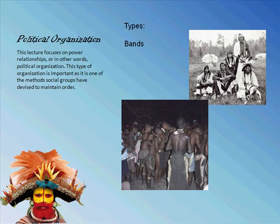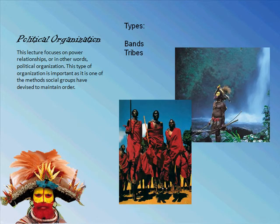The next type of political organization is a tribe. These are a little bit more formal than bands. We generally see this in horticulturalists and pastoralists, and it may be comprised of several bands or lineage groups. They might be connected through a clan structure, and kinship is the primary basis of membership. These groups might be 100 people, or they might be up to several thousands, so tribes can get quite large.